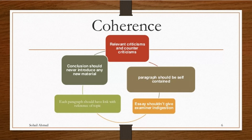One important thing to take care of when writing your essay is coherence. Coherence has five main points. The first point is relevant criticism and counter-criticism — if you criticize a topic, you will definitely counter-criticize it as well.